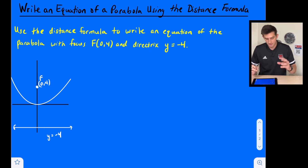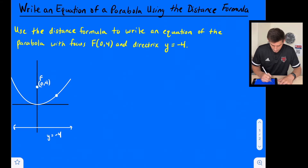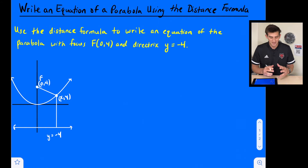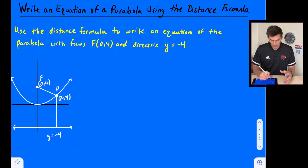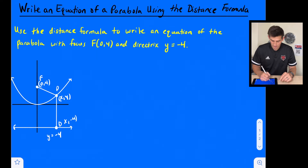Now we're going to use the distance formula. What we know about the focus and the directrix is that the distance from the focus to a point on the parabola equals the distance from the directrix to that same point. So if we put a point on our parabola, let's call it x comma y — that's point P. The corresponding point D on the directrix is x comma negative 4, since we know the y-value there is negative 4.